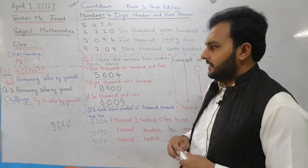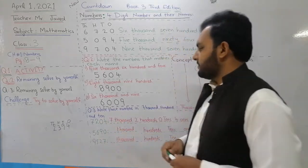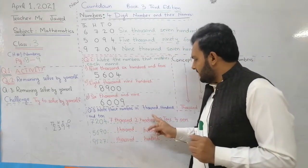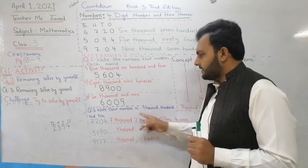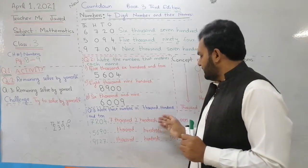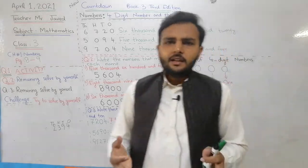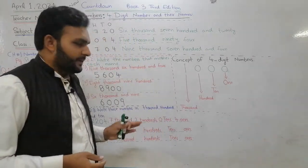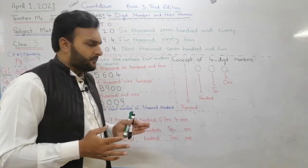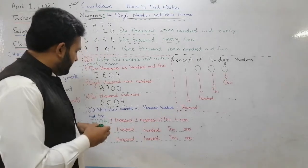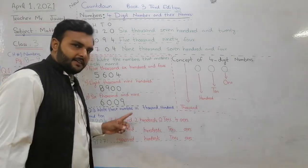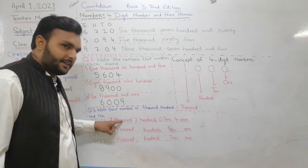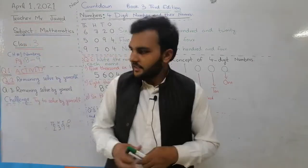Question number 3 — the remaining questions you will solve. Write these numbers in thousands, hundreds, tens, and ones form. We have to tell how many thousands, how many hundreds, how many tens, and how many ones are in the number. I have already solved one question here — how many thousands? 7,000s. The last activity is our challenge — you have to try to solve it.